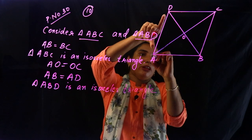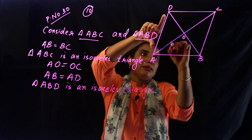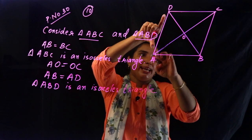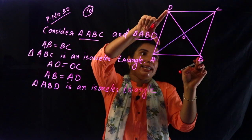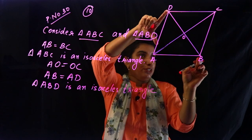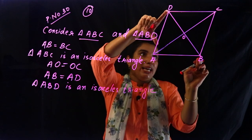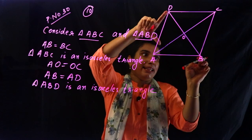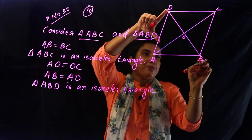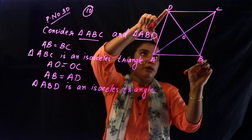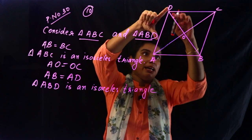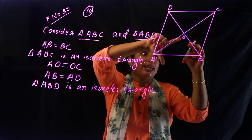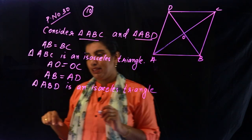This bisects the angle B. The line BD bisects such that DO is equal to OB. Therefore DO equals OB.